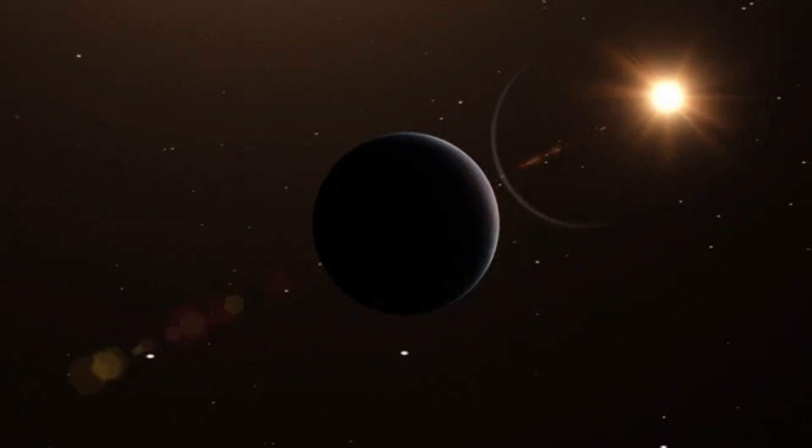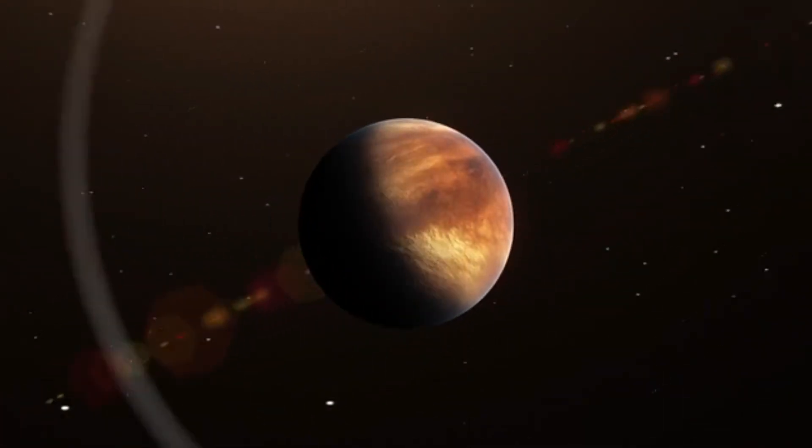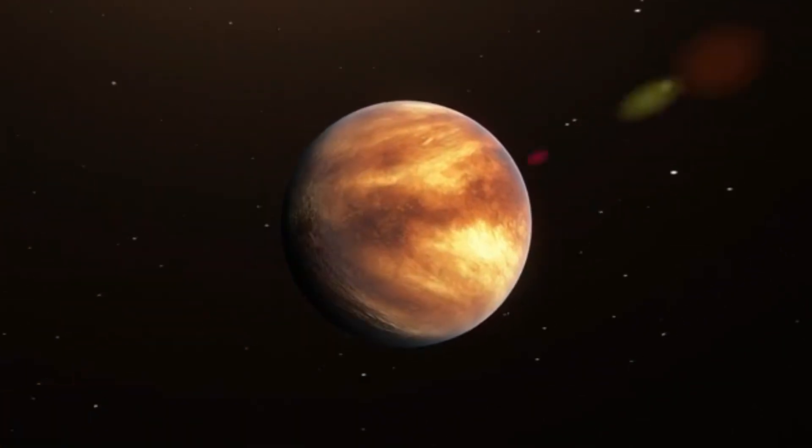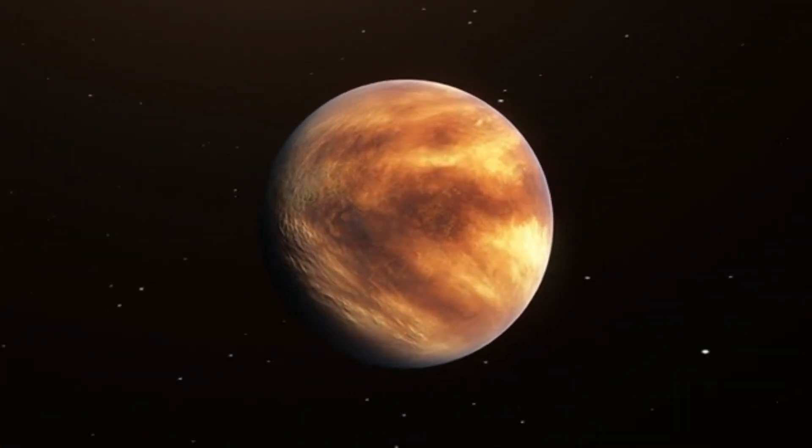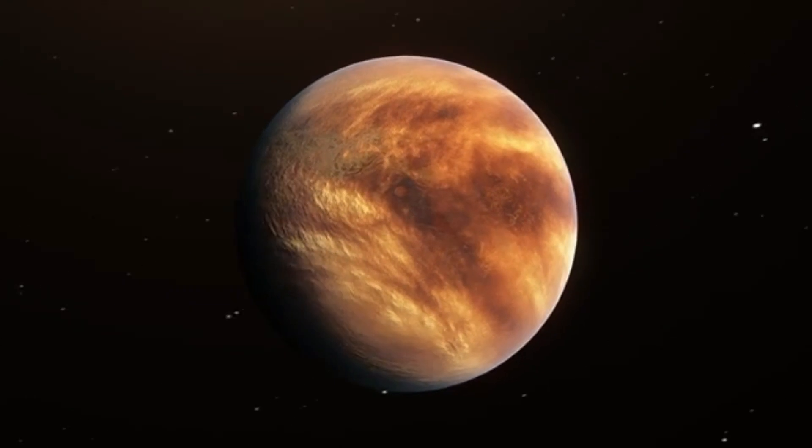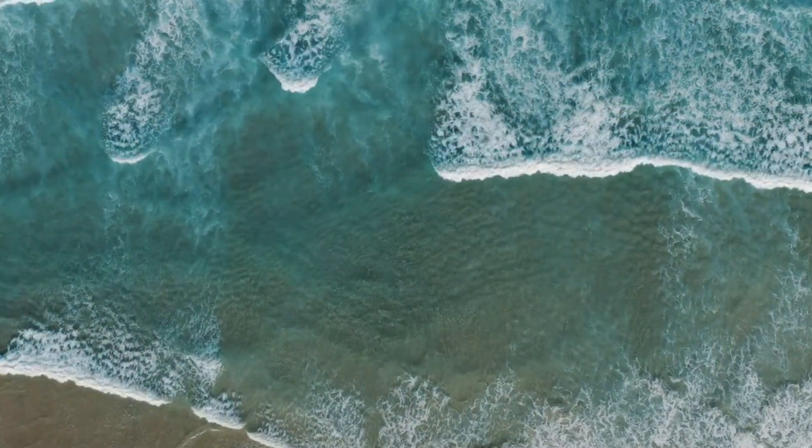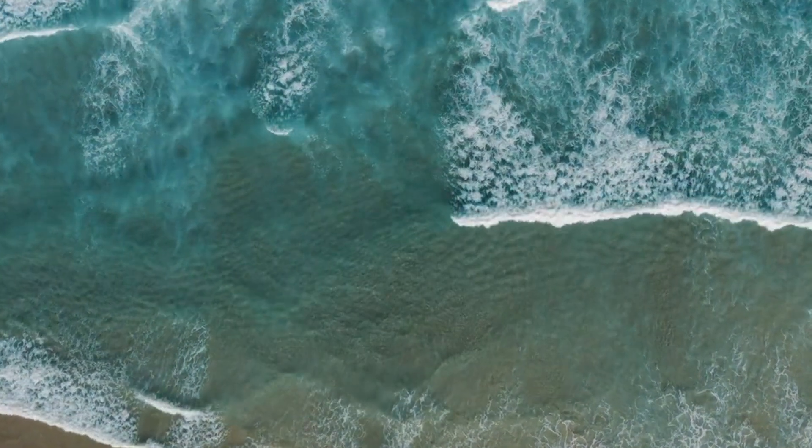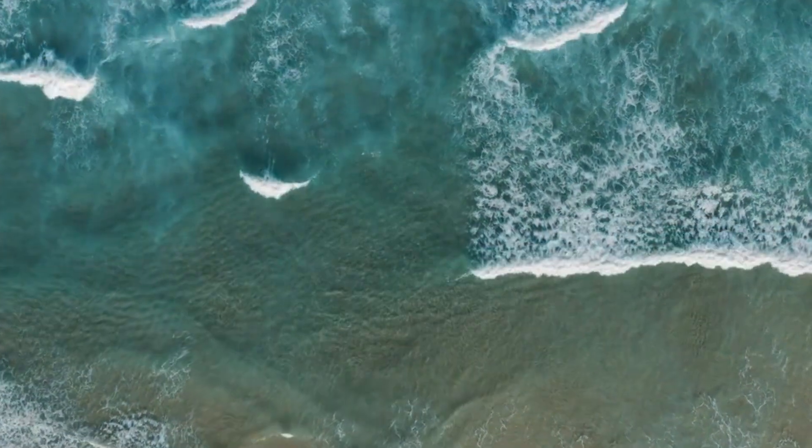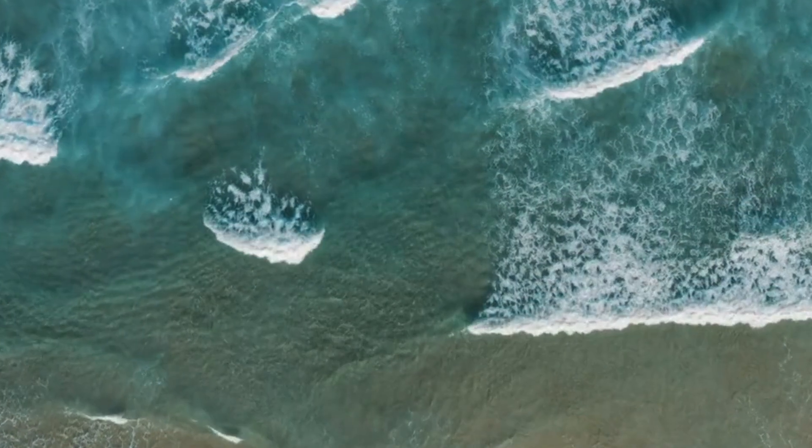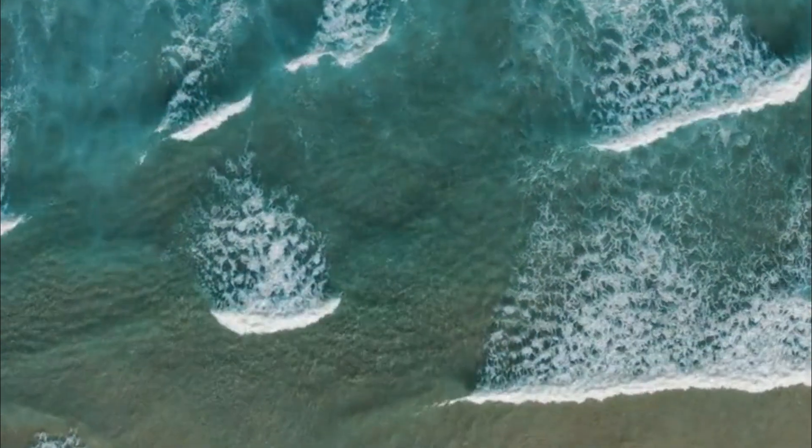The exoplanet orbits very close to its host star, which is a red dwarf known for its stellar flares. These flares could bombard the planet with high levels of radiation, potentially stripping away its atmosphere over time. The atmosphere's ability to support liquid water might be compromised if it is too thin or if it becomes heavily influenced by stellar activity.